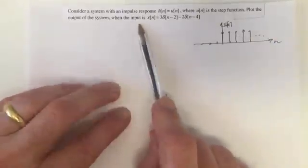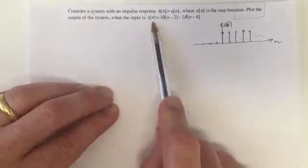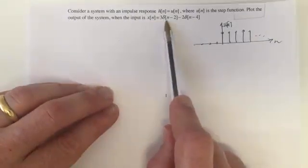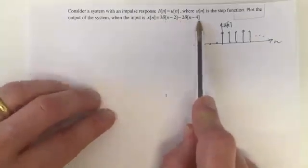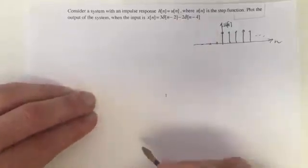And we're saying instead of giving it just an impulse we're going to put this input in where x(n) equals 3δ(n-2) minus 2δ(n-4). The question is plot the output.